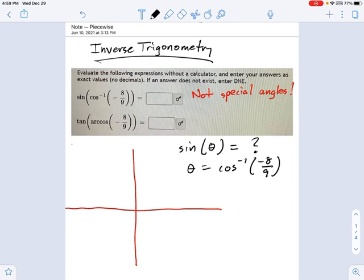Now if theta is the inverse cosine of negative eight-ninths, that means the cosine of theta is negative eight-ninths. So scratch out that middle part, if that's distracting you, and just look at it this way. If there's an angle such that the cosine is negative eight-ninths, what's the sine?